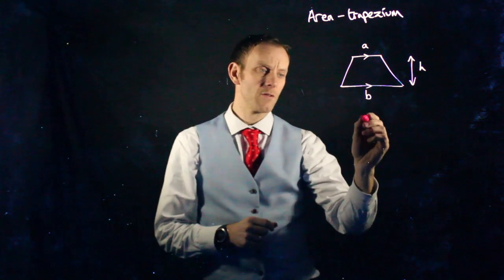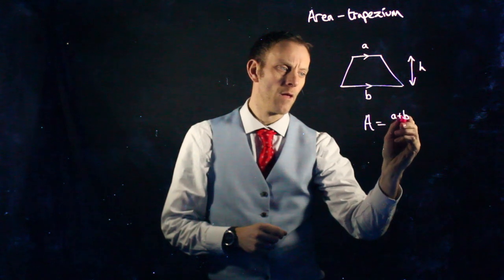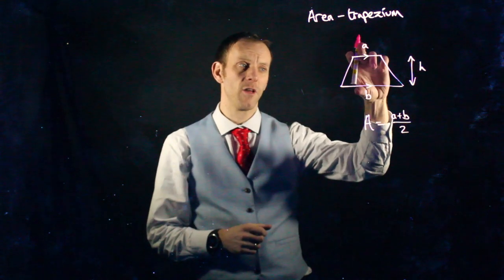The formula to find the area of a trapezium: we add together A and B and divide by 2, which is effectively finding the average of those two lengths.